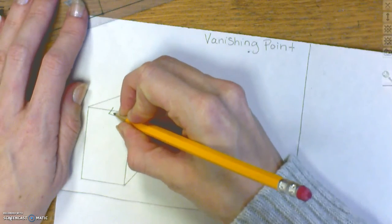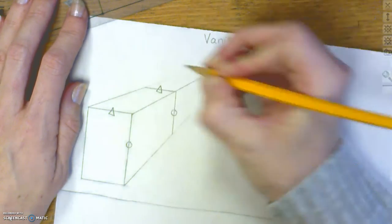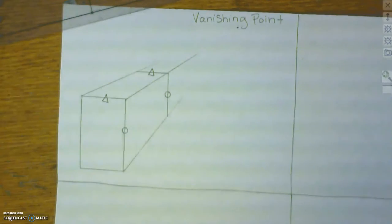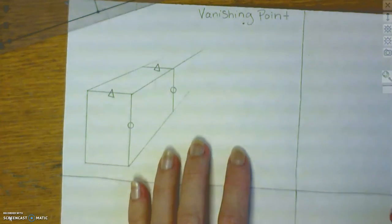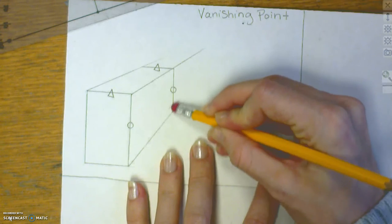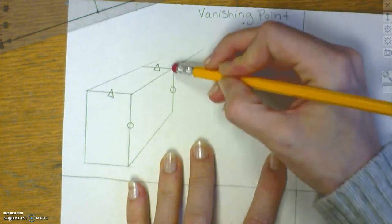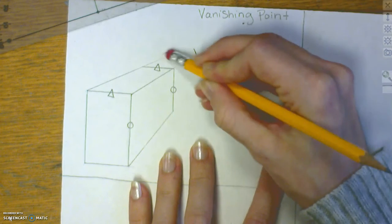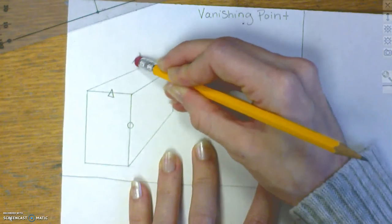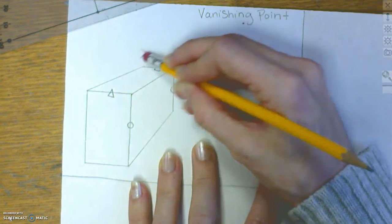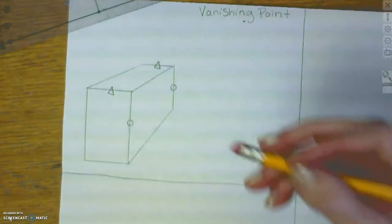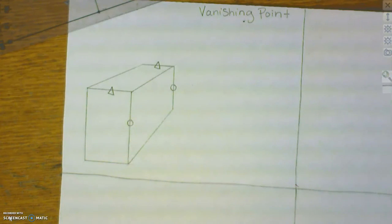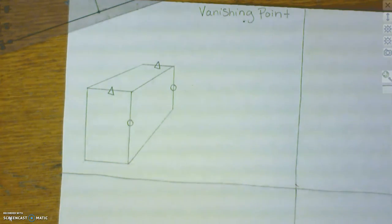Now I need to erase any extra lines. This is why we don't draw the lines all the way to the vanishing point — your final drawing will be a mess. In our practices, it is okay to make mistakes. Fix them now on the practices. Ask questions now on the practices before we get into our final drawing. At this point, you can pause the video and finish this. Make sure you understand what's going on before you go to the next one.